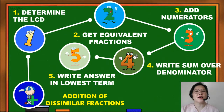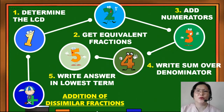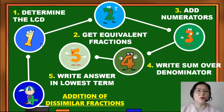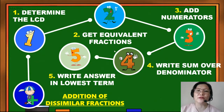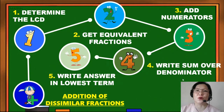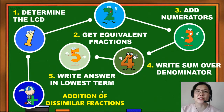This time, we're going to have addition of dissimilar fractions. What are we going to do to add dissimilar fractions? Number one, determine the LCD. Number two, get equivalent fractions. Number three, add numerators. Number four, write sum over denominator. Number five, write answer in lowest term.